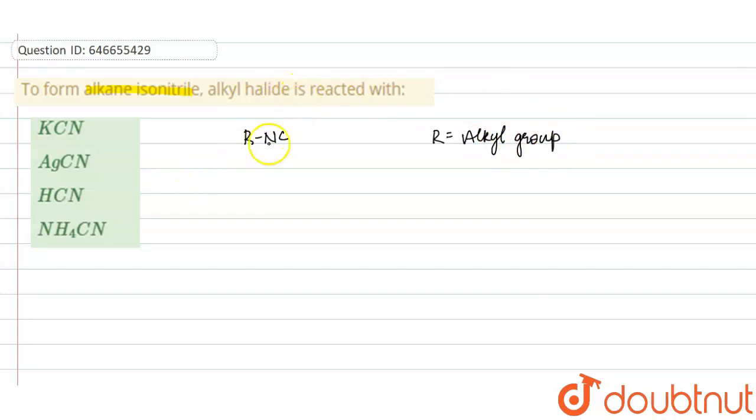So alkyl halide reacted with what? The reaction here occurs like this: R-X reacts with AgCN, forms R-N≡C and the byproduct is AgX. This is your reaction. So the alkyl halide reacts with AgCN to form the alkane isonitrile. This is your alkane isonitrile.